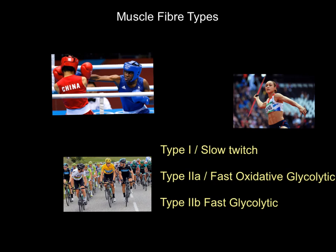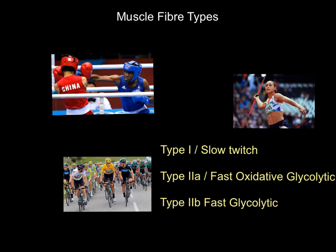Your skeletal muscles — your gastrocnemius, your pecs, whatever it is — are comprised of a combination of Type 1 (slow twitch) muscle fibers, Type 2a fast oxidative glycolytic (FOG) fibers, or Type 2b fast glycolytic (FG) fibers. Basically every muscle in your body is a combination of these three kinds. We're going to look at the characteristics of each fiber type and which events they are most suited to.